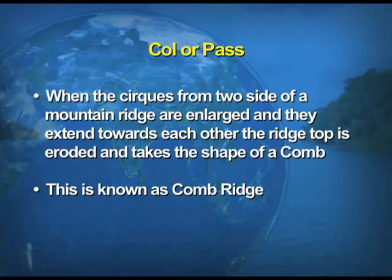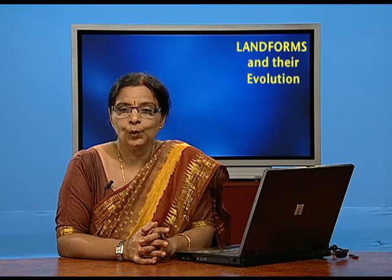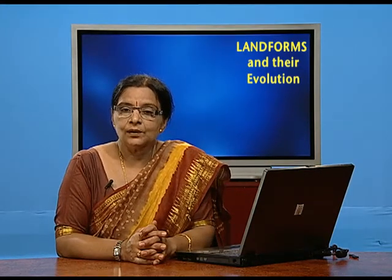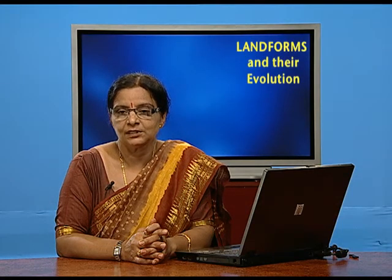The next feature is arête, or comb ridge. As the name indicates, it looks like a comb. When cirques from two sides of a mountain ridge are enlarged and extend towards each other, the ridge top gets eroded. As a result, it takes the shape of a comb, known as a comb ridge or arête. On the screen you can see the visual showing the top of the mountain ridge eroded by the enlargement of cirques, giving the shape of a comb ridge.